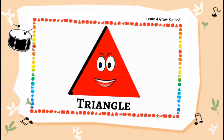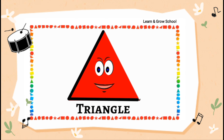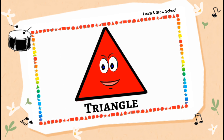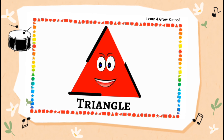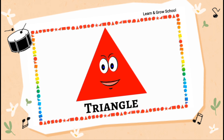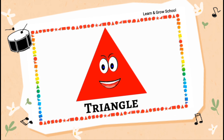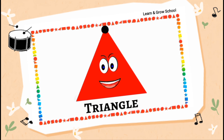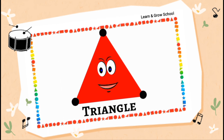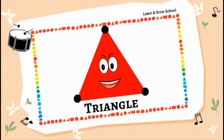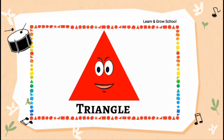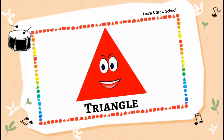One, two and three. I have three sides and three corners too. One, two and three. My three sides and three corners make me a triangle.